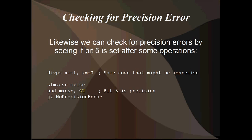Checking for precision error: if you've got any divisions in your program at all, it's fairly likely there's been a precision error. You can check by seeing if bit number 5 is set after a bunch of operations. Run something like DIVPS XMM1, XMM0, then AND your stored MXCSR with 32, which is 2 to the power of 5. If that comes out as zero, there's been no precision error and the answer in XMM1 is exactly right — though that'll almost never happen. You can't even divide by three without getting precision errors, so it's worth knowing how to check if there's been any rounding, especially if you really need that precision.